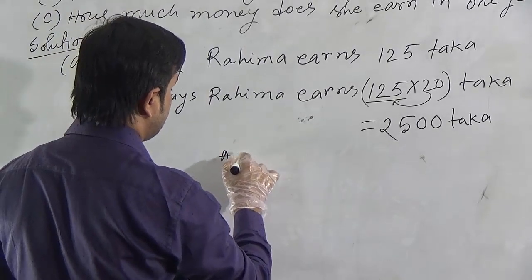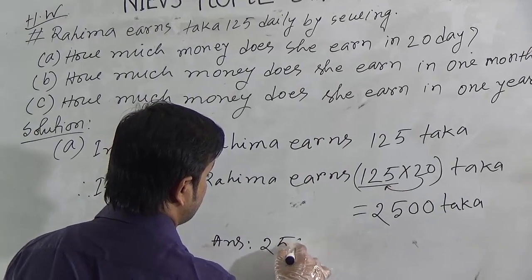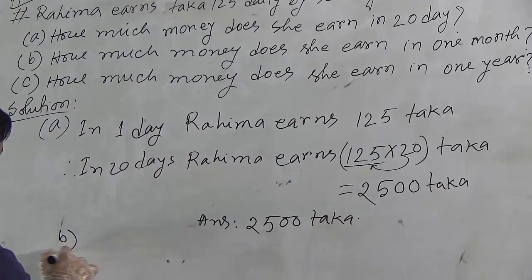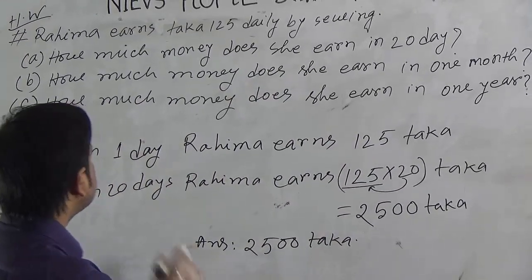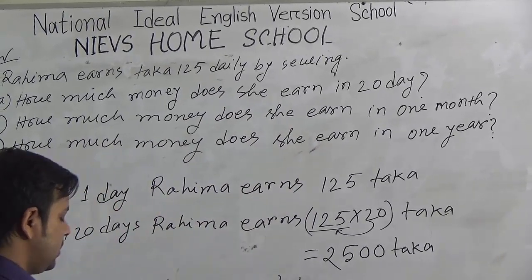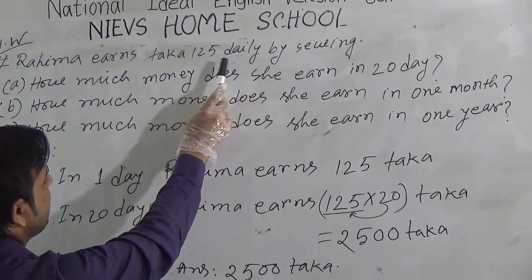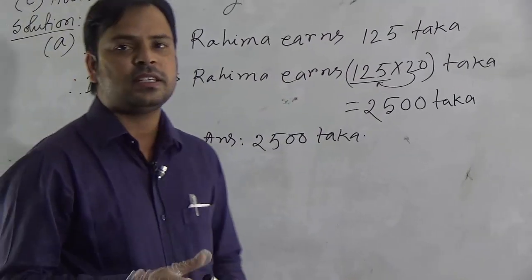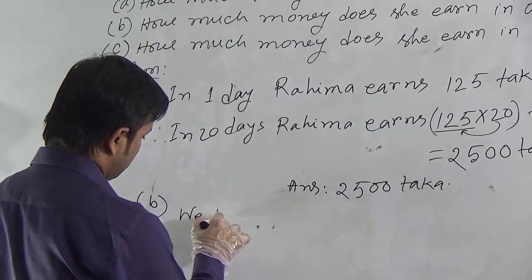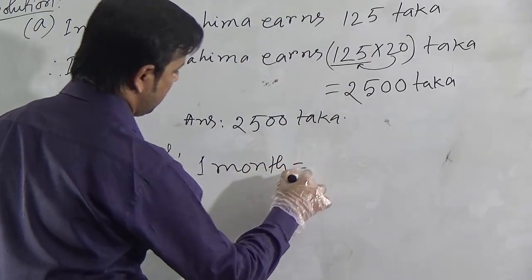This is our required answer for question A. Now, I will solve question B. Question B is, how much money does she earn in 1 month? As the information given in day, at first we have to know 1 month is equal to how many days. We know 1 month equal to 30 days.